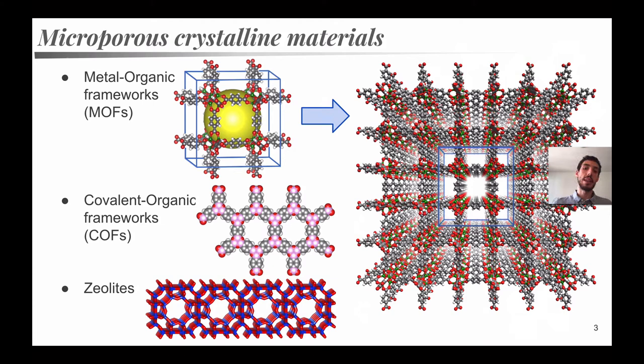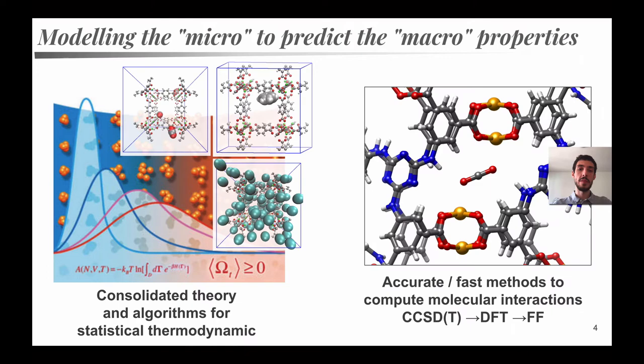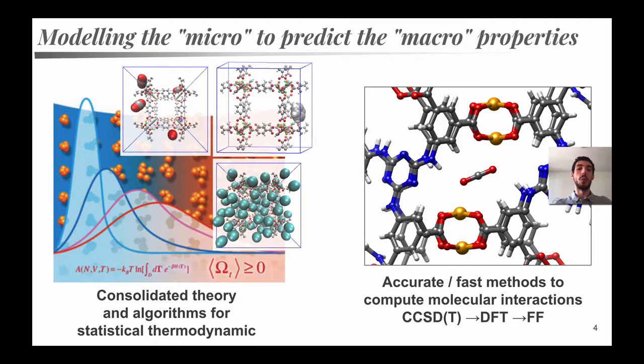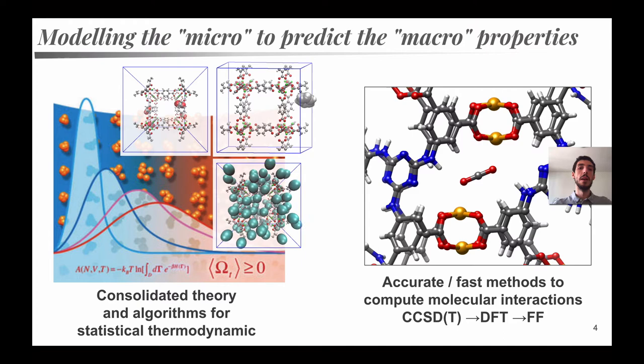Of course, we can simulate these materials because we assume that they are crystalline, and therefore, studying the unit cell, we can get information on the bulk material. But I let you imagine how expensive is the simulation of these materials because we have hundreds of atoms and very big unit cells with a lot of vacuum. Indeed, this is the big problem, the big challenge of adsorption is that we have theory to study thermodynamical properties and transport properties of molecules inside these materials.